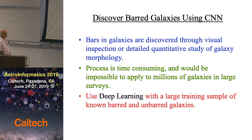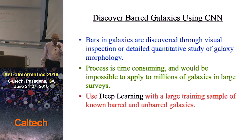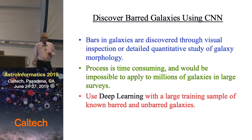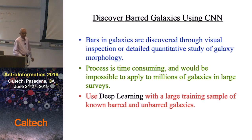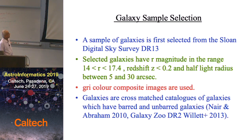We want to build up large samples of bar galaxies. Normally this is done through visual inspection, which is very tiresome. If you look at large samples where people have actually classified bars, you are really talking about a couple of thousand galaxies. But if you want to do it for millions of galaxies, you clearly require an automated procedure. So the idea is to use deep learning to do that, beginning with a sample of galaxies from the Sloan survey using colour composite images.